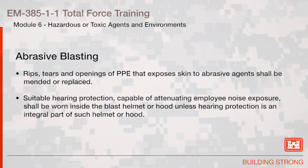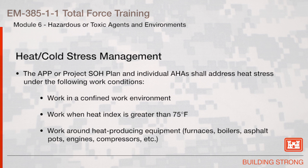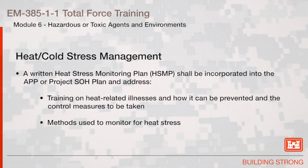The APP or project SOH plan and individual AHAs shall address heat stress under the following work conditions: CONUS and OCONUS locations when hot and dry or hot and humid environments are forecasted; work conducted in semi-permeable or impermeable clothing and/or heavy clothing such as arc-rated suits; work in a confined work environment; work occurs when the heat index is greater than 75 degrees Fahrenheit; and work occurs around heat-producing equipment such as furnaces, boilers, asphalt pots, engines, compressors, etc. A written heat stress monitoring plan shall be incorporated into the APP or project SOH plan and shall address training on heat-related illnesses, how they can be prevented, and the control measures to be taken.